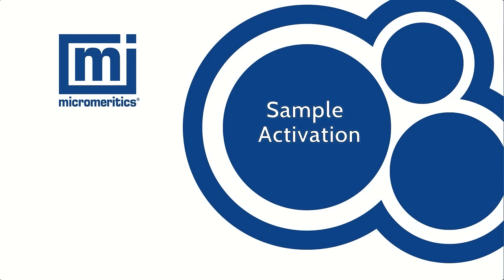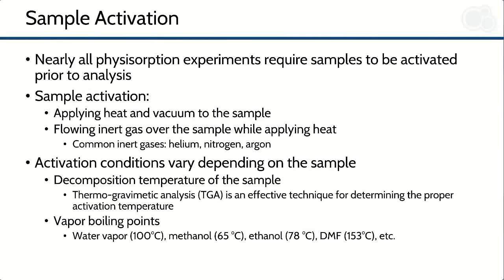To start off with sample activation: nearly all physisorption experiments require samples to be activated prior to analysis. So what is activation? In general, there are a couple of different ways you might activate your samples. You may apply heat to the sample while also pulling vacuum on the sample. Alternatively, when you don't have access to a vacuum, you may flow an inert gas over the sample while applying heat. Some of the most common inert gases are helium, nitrogen, and argon, all of which absorb very little at room temperatures for most materials.